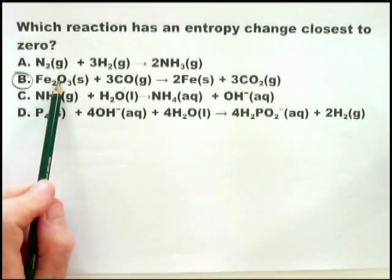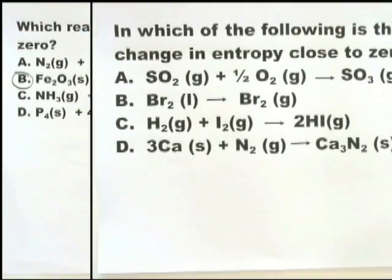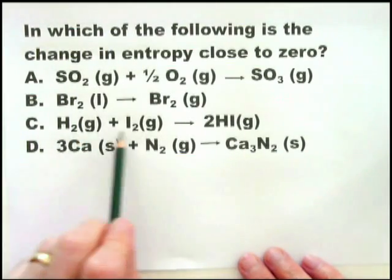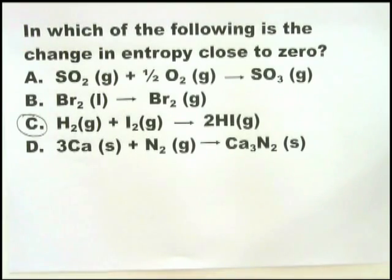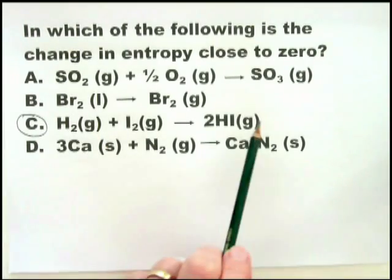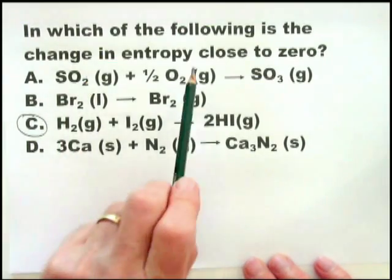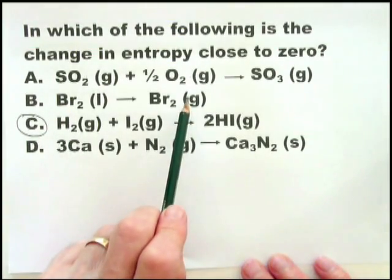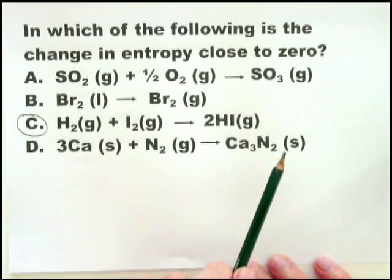In less than 20 to 25 seconds you can see that. For the next question, we're looking for entropy change close to zero. H₂ gas plus I₂ gas going to 2HI — there it is. Number of gas molecules on the left equals the number on the right. Quickly checking the others: one and a half gas molecules going to one gas molecule — negative change. Liquid going to a gas — positive change. Gas going to a solid — negative change. This confirms that H₂ + I₂ → 2HI is the only one with an entropy change close to zero.